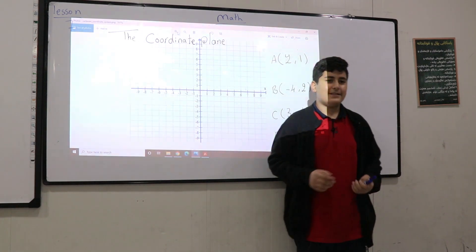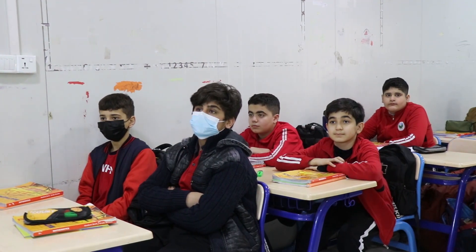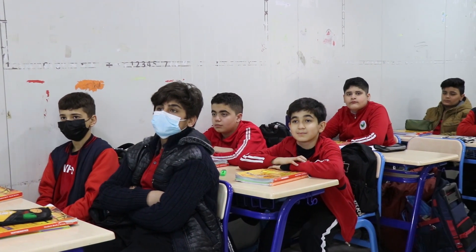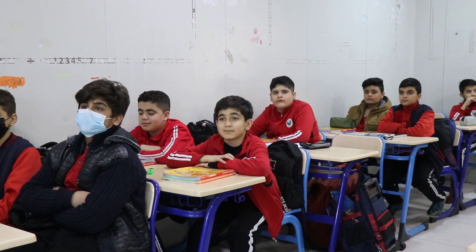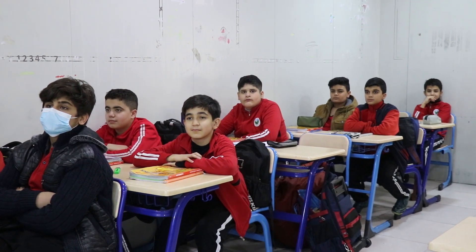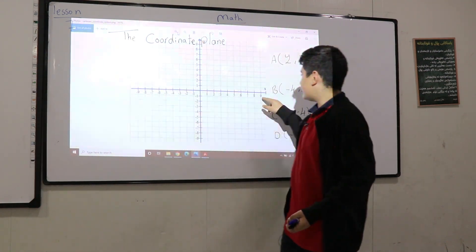So the coordinate plane is the plane which contains the horizontal line x-axis and the vertical line which is y-axis. And we have origin. Origin is the intersection between x-axis and y-axis. This is y-axis. This is x-axis.